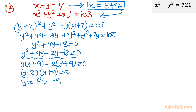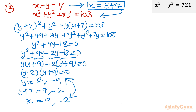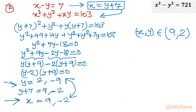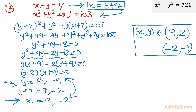Since x = y + 7, adding 7 to each solution: y = 2 gives x = 9, and y = -9 gives x = -2. So the ordered pairs from this system are (9, 2) and (-2, -9).